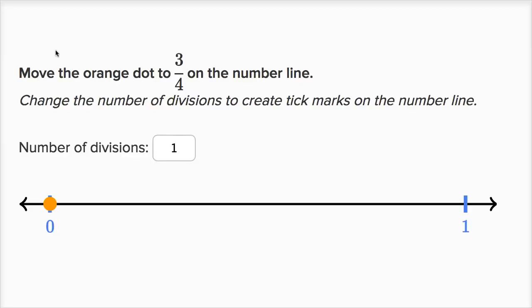We're on the fractions on the number line exercise on Khan Academy, and they ask us to move the orange dot to 3 fourths on the number line. Change the number of divisions to create tick marks on the number line.